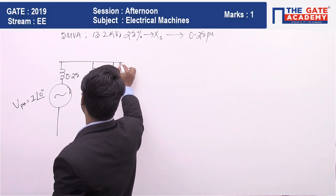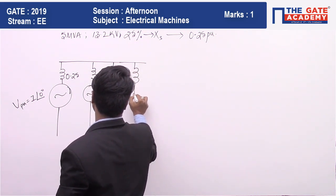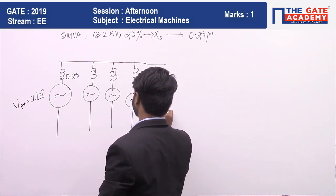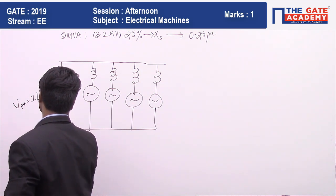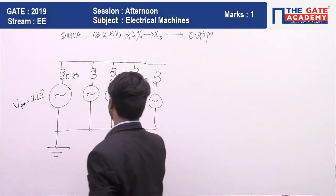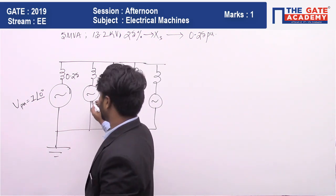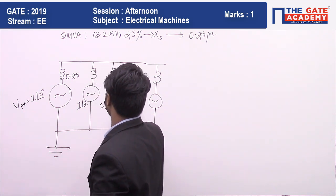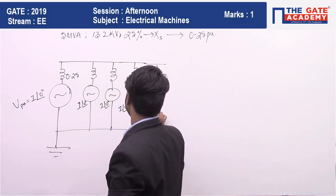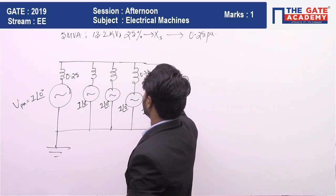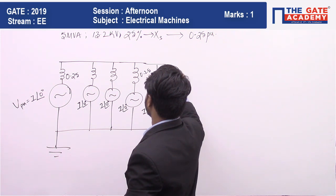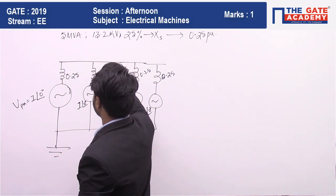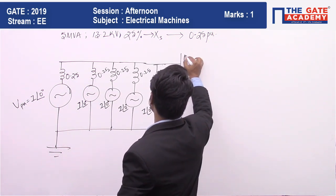Drawing the circuit diagram — this is not necessary, just to give an idea. These are the five alternators in parallel, each having one per unit at angle zero as voltage, and 0.25 per unit as its reactance: 0.25, 0.25, 0.25, 0.25, 0.25.